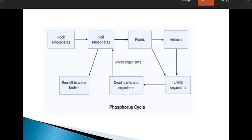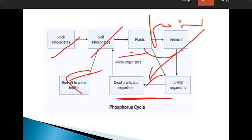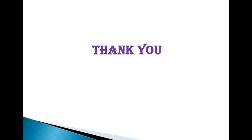Just look at this image — a simple phosphorus cycle. Rock phosphates to soil phosphates, then taken up by plants; through the food chain it moves, and when plants and animals die they enter the detritus compartment. This is the phosphorus cycle, and this is about the biogeochemical cycle overall. Thank you — I hope you understood this class. If you want to see more videos on my channel, please subscribe. Thank you.